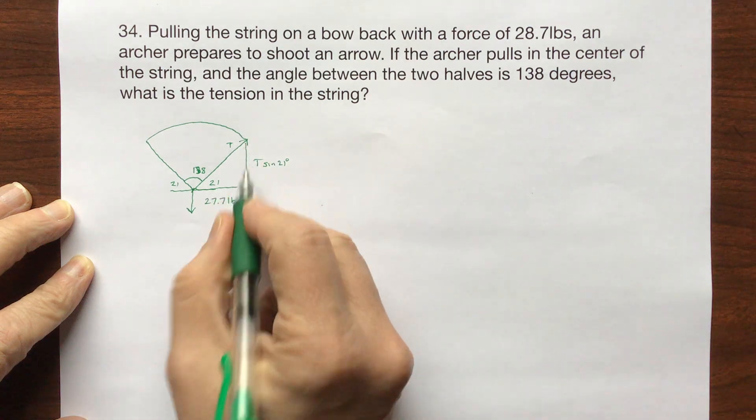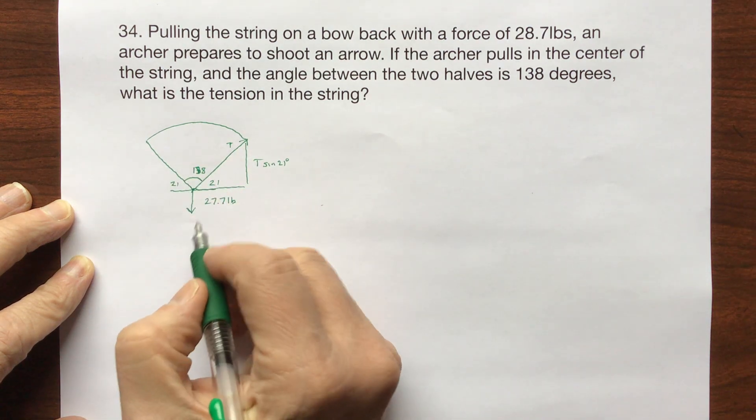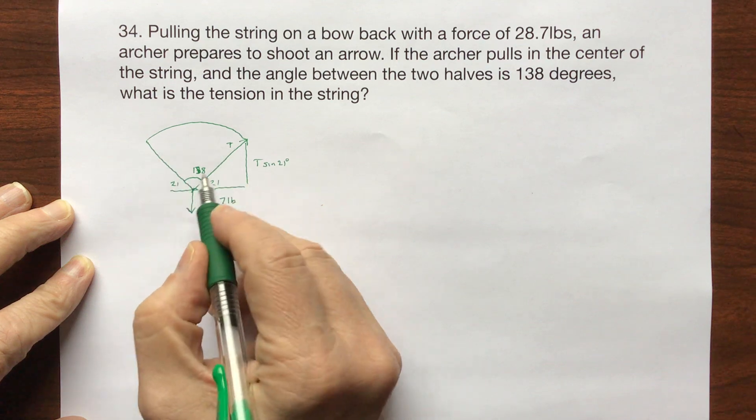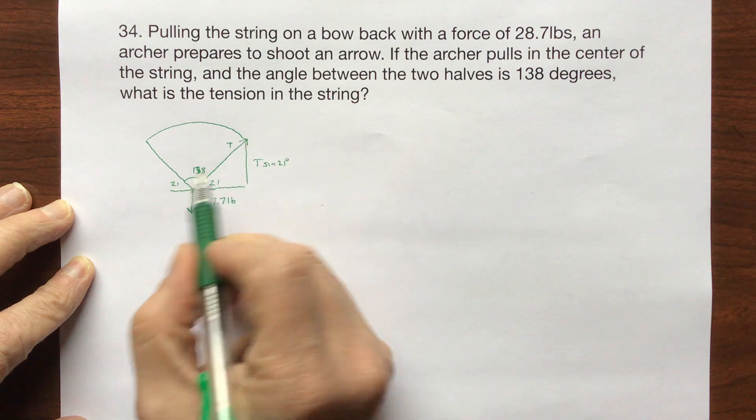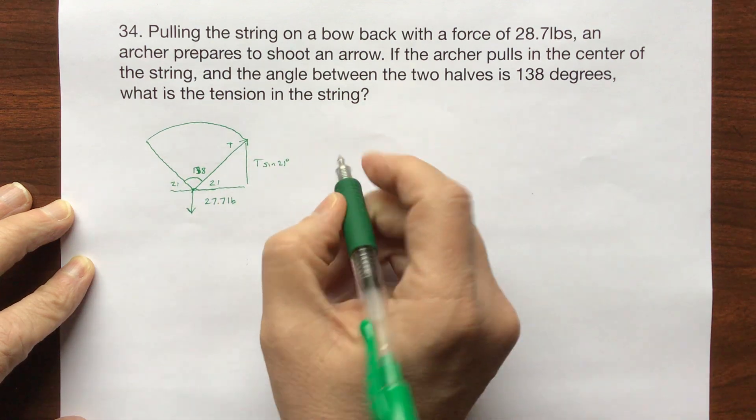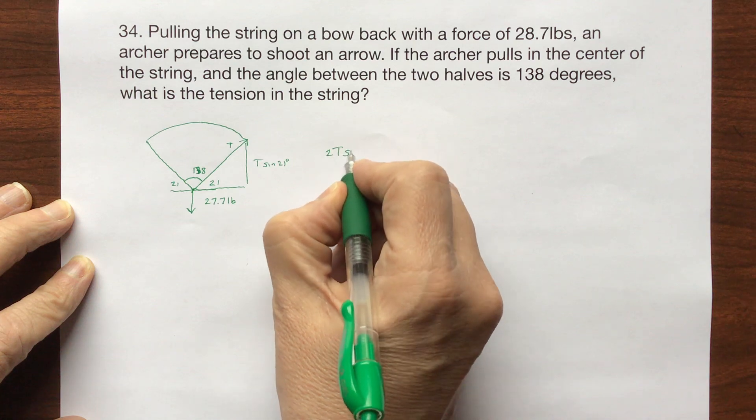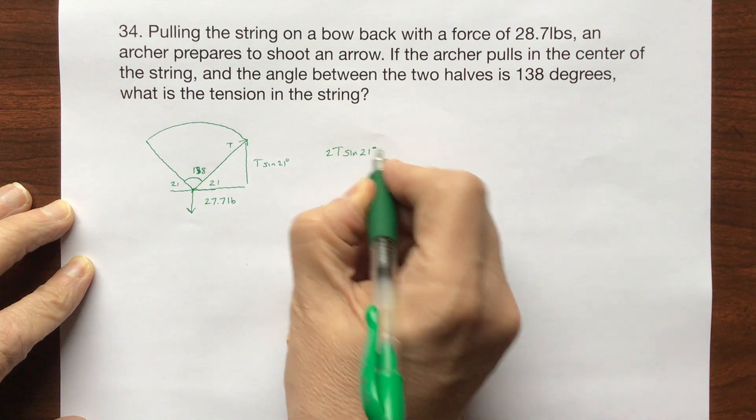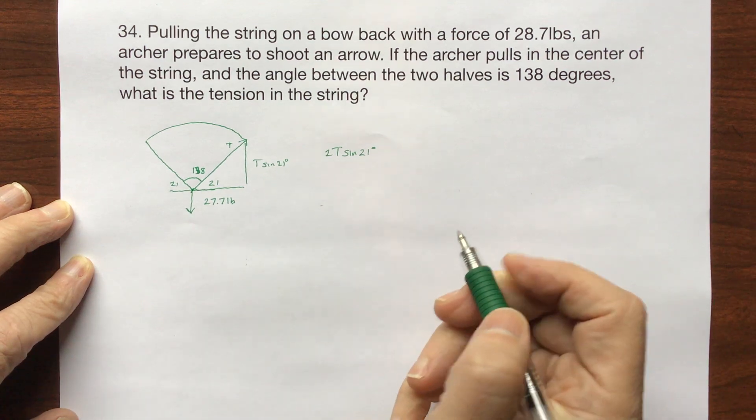I want this one plus this one to be countering this pull. I'm pulling back on the string here and then the tension in the string is going to be the other way, and I have this one plus this one. So I'm actually gonna have 2 times T times the sine of 21 degrees.